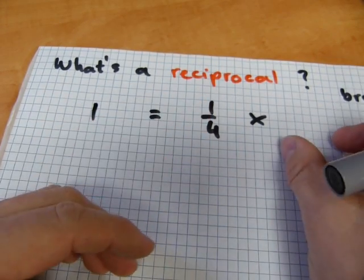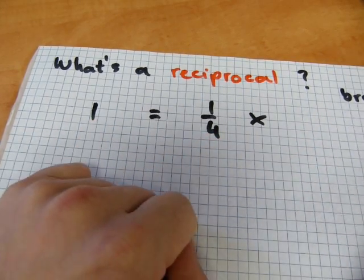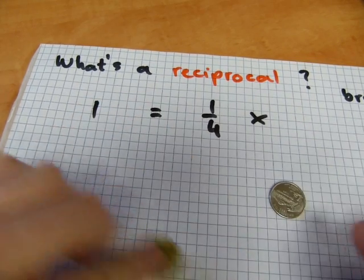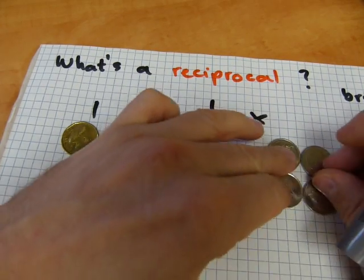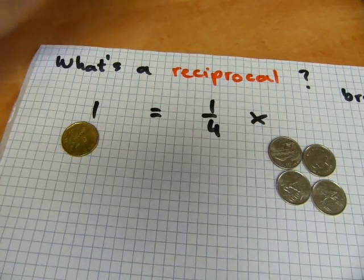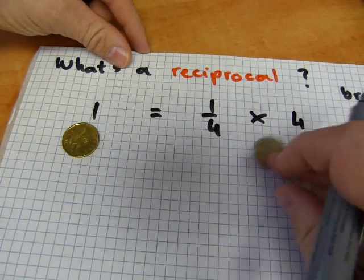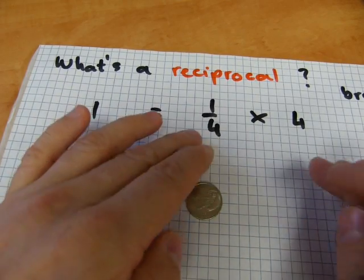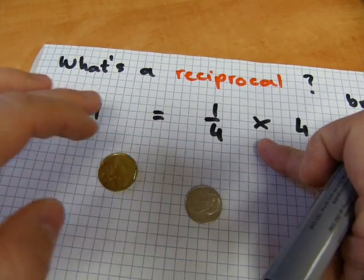So what number should we multiply a quarter by to get one? That number, if we have a quarter there, if we want to get one, that number has to be four. And I have here four quarters. And four is the piece count in this case, and quarter is the denomination. So quarter and four are reciprocals because their product equals one.